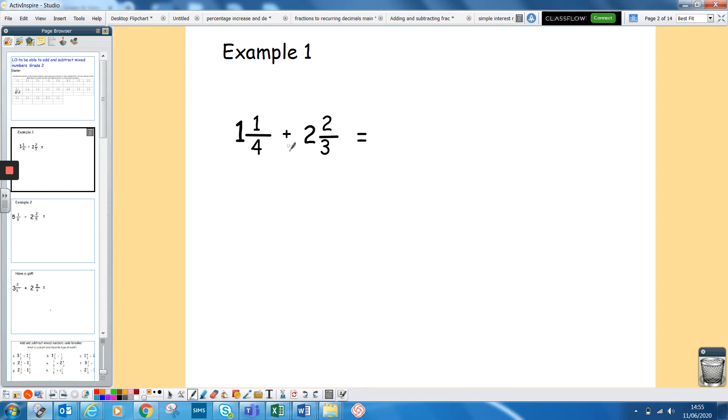Remember the method: one and a quarter, what we're going to do is do one times four plus one is five. So you're going to get five quarters. Then two times three is six, plus your two is eight. Eight fifths. Now we can add them together.